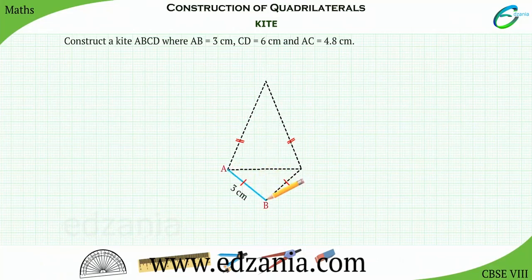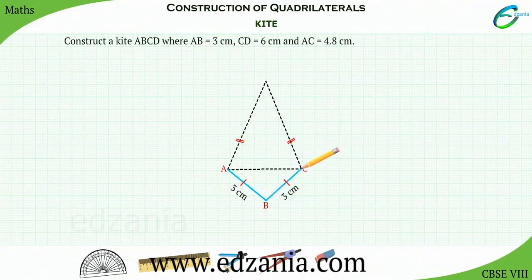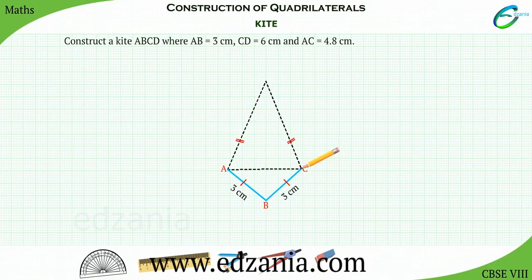As AB is equal to 3 cm, BC is also equal to 3 cm. Similarly, as CD is equal to 6 cm, we will have AD equal to 6 cm and AC is the diagonal.